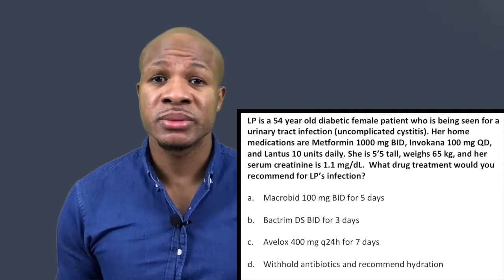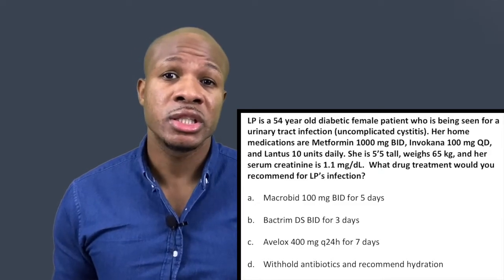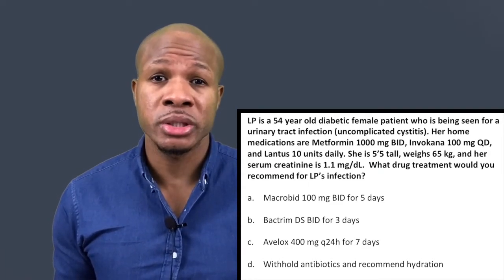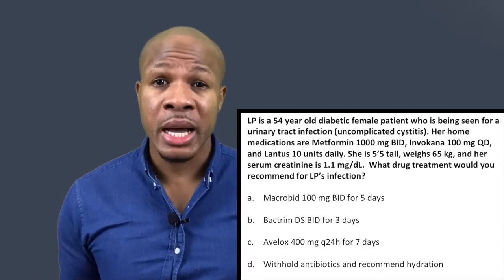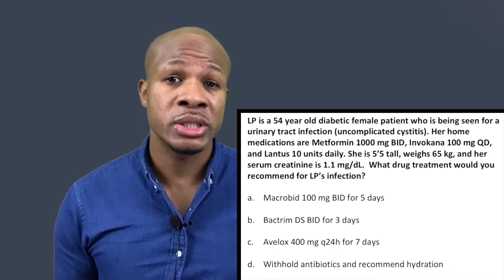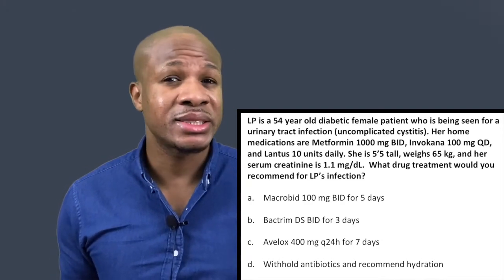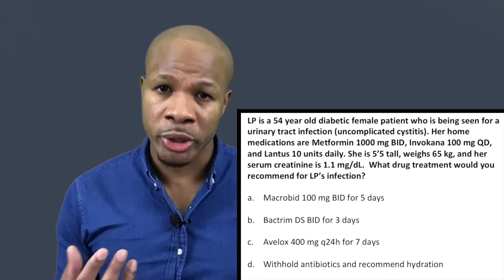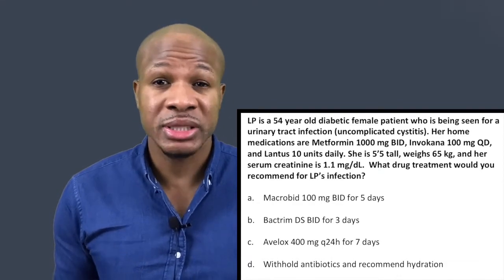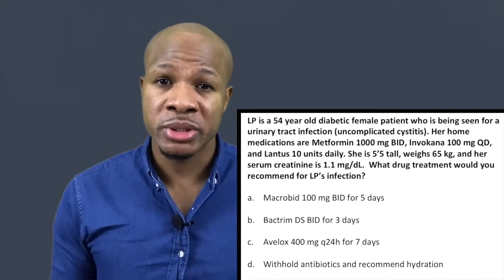So in this question there's a lot of details and moving parts. The whole purpose of her coming to see us is for treatment of the uncomplicated cystitis. According to the most updated guidelines, macrobid or nitrofurantoin is the preferred drug. But there must be a catch involved, and that catch probably has to do with renal function for this patient, which is why we're given the serum creatinine concentration. So before we choose macrobid as our answer, let's make sure the patient's renal function is adequate enough to give her this drug.